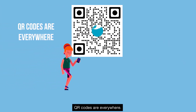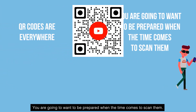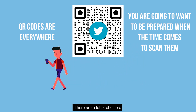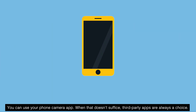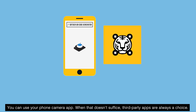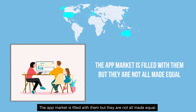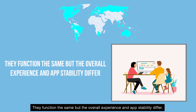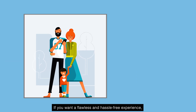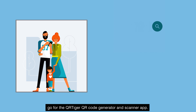You are going to want to be prepared when the time comes to scan them. There are a lot of choices — you can use your phone camera app. When that doesn't suffice, third-party apps are always a choice. The app market is filled with them, but they are not all made equal. They function the same, but the overall experience and app stability differ. If you want a flawless and hassle-free experience, go for the QR Tiger QR code generator and scanner app.